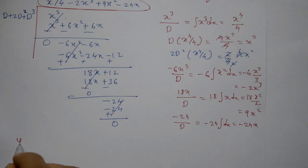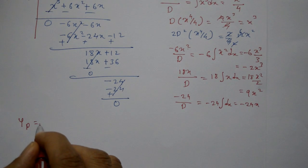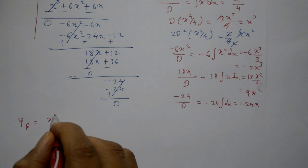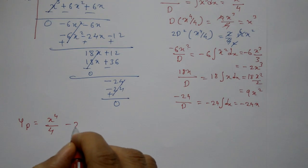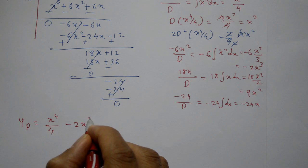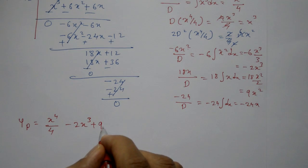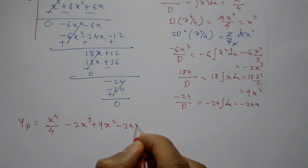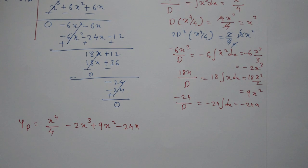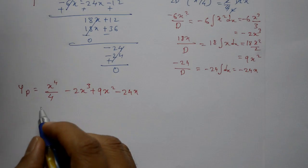So the particular integral Yp = x⁴/4 - 2x³ + 9x² - 24x.